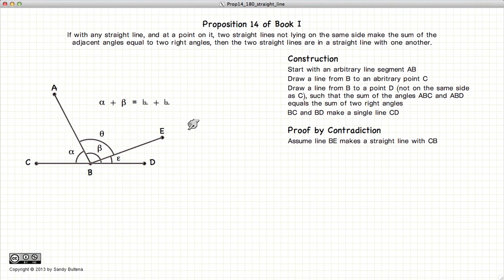So let's begin by defining a line segment BE such that CBE form a straight line. Now by our previous propositions, we know that alpha and theta added together has to equal 180 degrees if CBE is indeed a straight line.